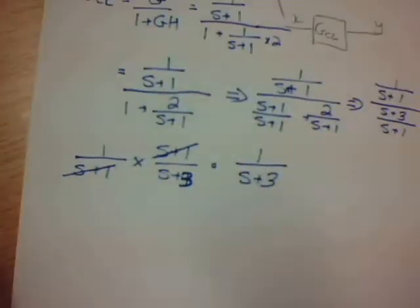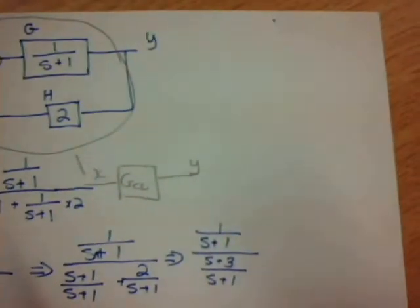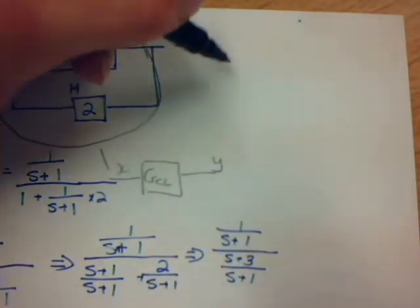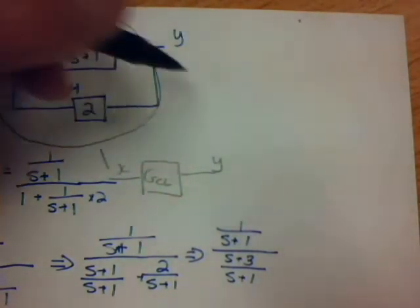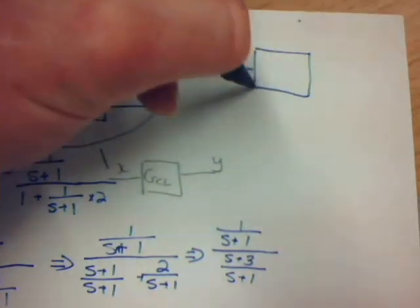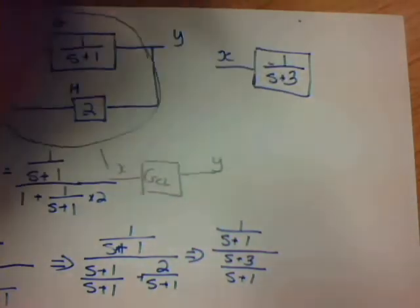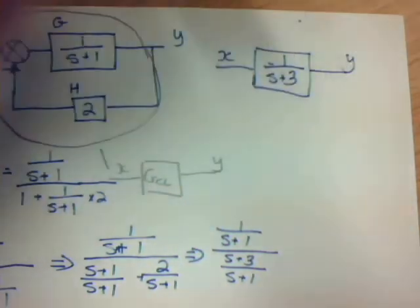To go back to the original simplified version, I can now rewrite this whole transfer function as an input X, and the transfer function is 1 over S plus 3, and we have the output.